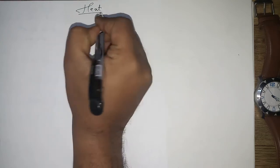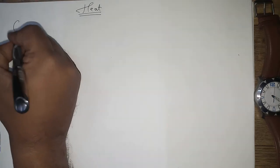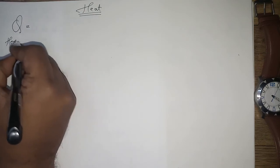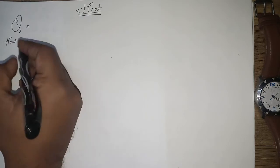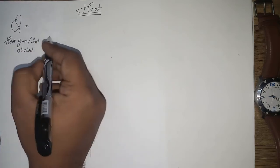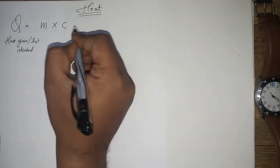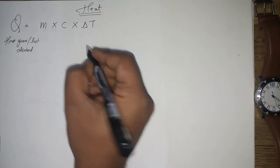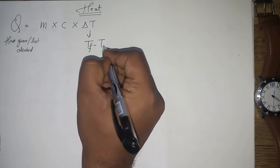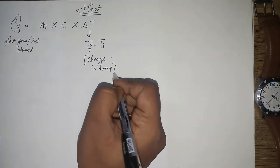Hello kids, in this video let's discuss numericals on the concept of heat. Heat given or heat lost, represented by Q, equals mass of the object times specific heat capacity times change in temperature. Delta T is final temperature minus initial temperature.